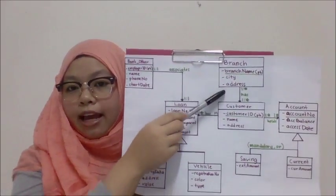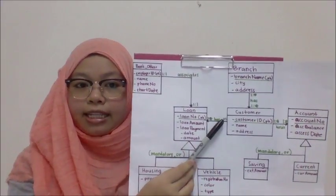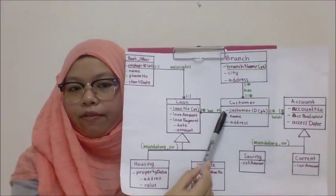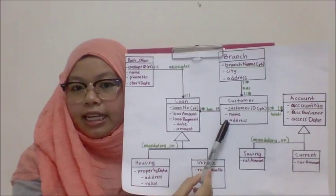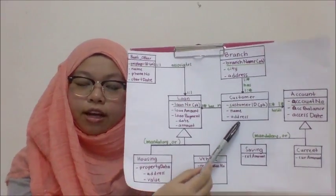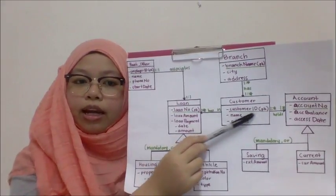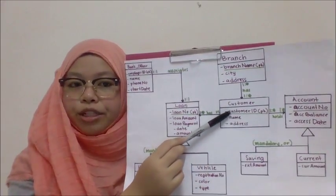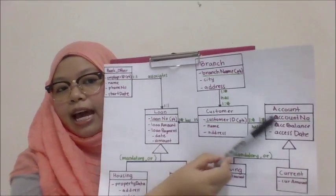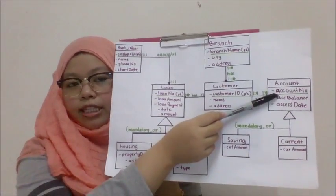The next entity is the customer entity. Under the customer entity, the attributes are customer ID, name, and address of the customer. The underlined one is the primary key, which is the customer ID.